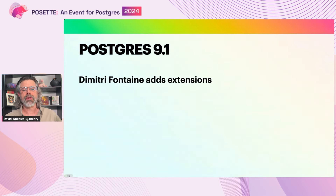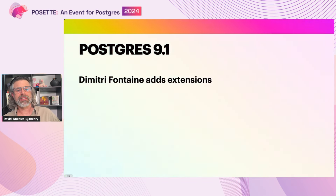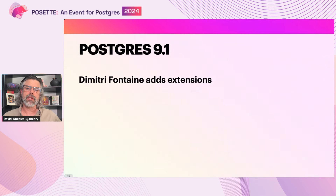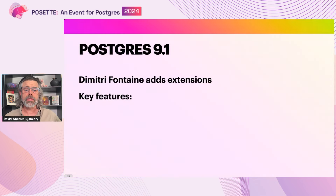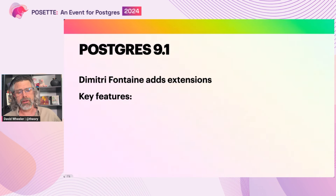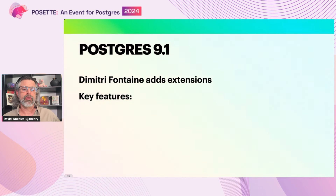Then Dimitri Fontaine submitted a patch for formal extension support, which was committed and released in Postgres 9.1 back in 2011. This work built on those existing patterns for extending Postgres, but formalized things through three key features.